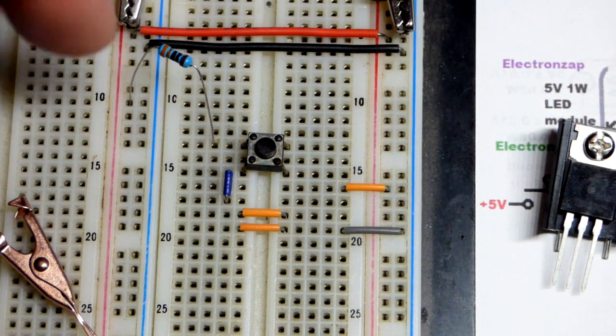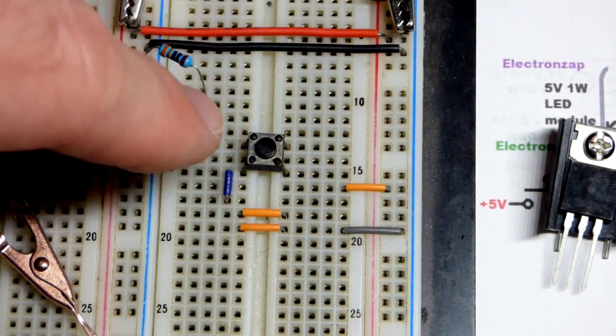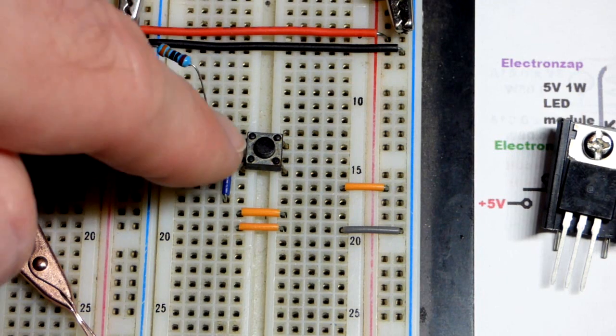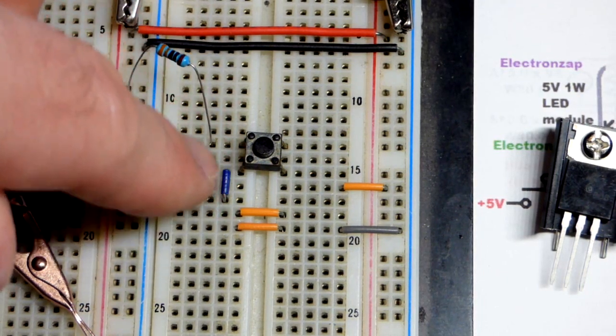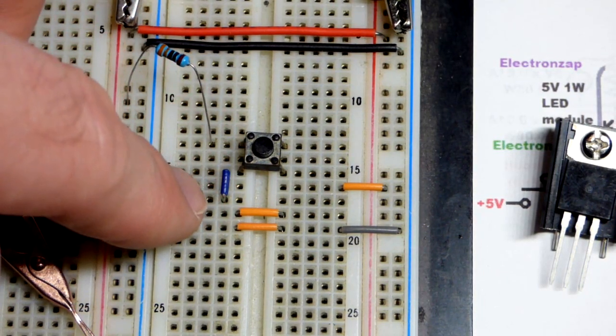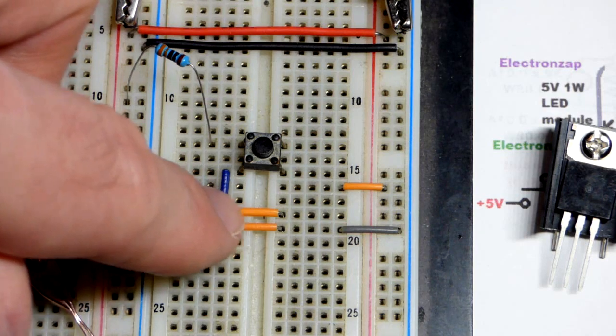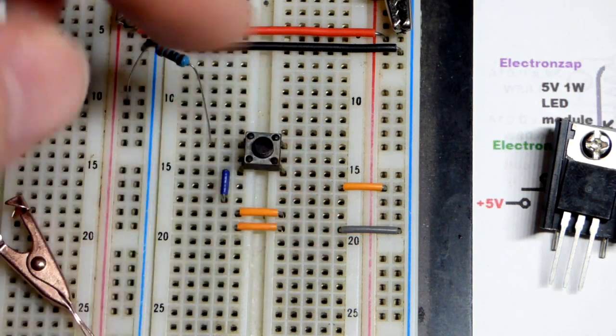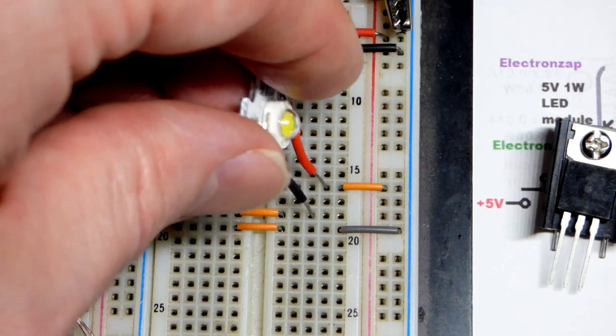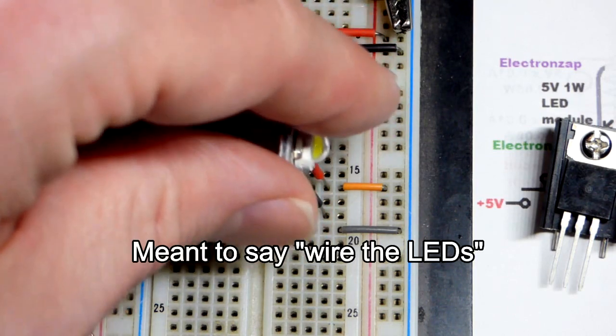So we have this resistor, the positive side supply to the top of the switch, and then bottom of the switch this little jumper right there, so that's going to be the base. And then the collector is going to be down here. So between these two jumpers we can wire the switches.